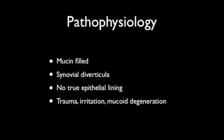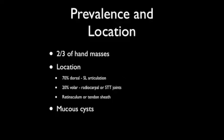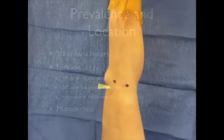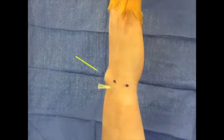Ganglion cysts are mucin-filled synovial diverticula without true epithelial linings that herniate due to trauma, irritation, or interligamentous attenuation with mucoid degeneration. Ganglion cysts constitute approximately two-thirds of all hand masses. Seventy percent are located in the dorsal capsule area and originate from the scapholunate articulation.